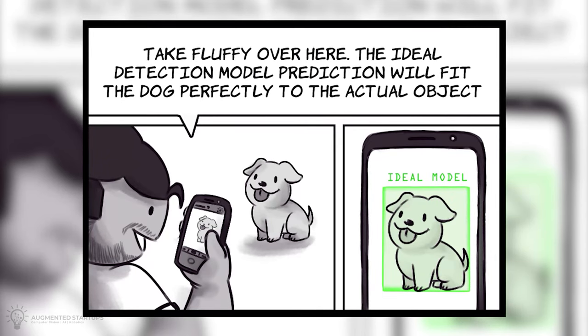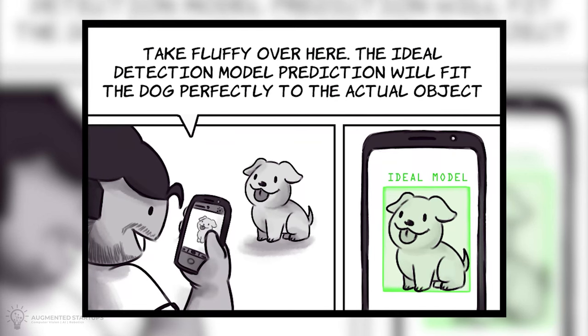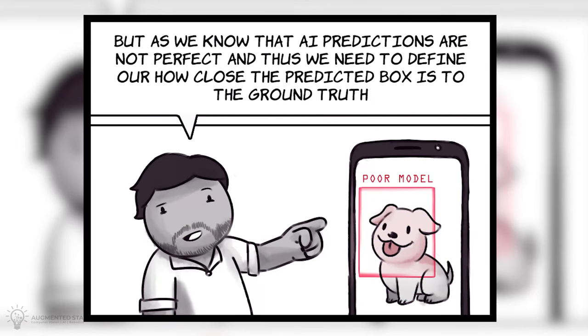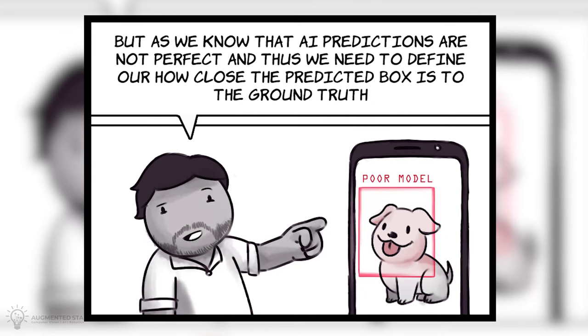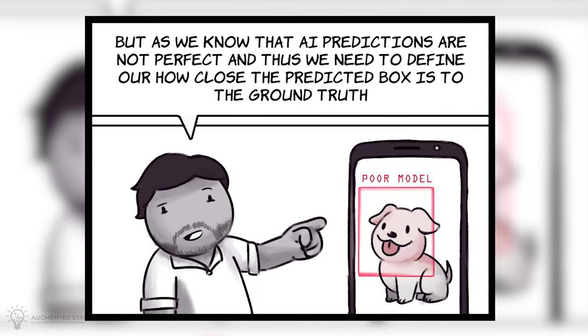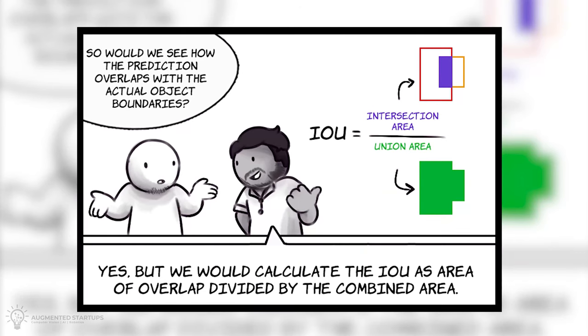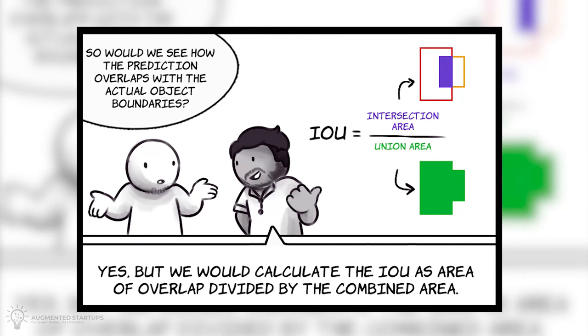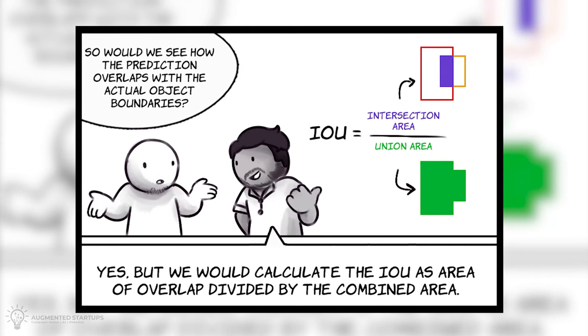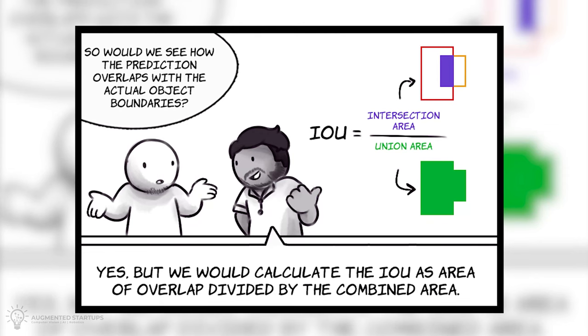Take Fluffy over here. The ideal detection model prediction will fit the dog perfectly to the actual object. But as we know that AI predictions are not perfect, and thus we need to define how close the predicted box is to the ground truth. So, would we see how the prediction overlaps with the actual object boundaries? Yes, but we need to calculate the IOU as area of overlap divided by the combined area.